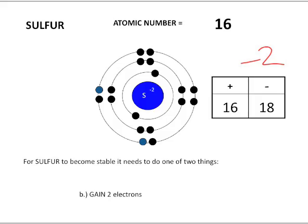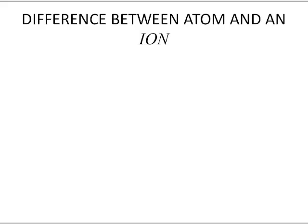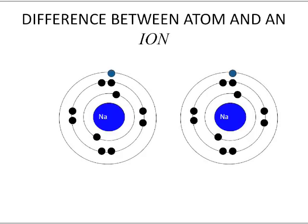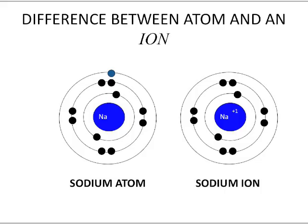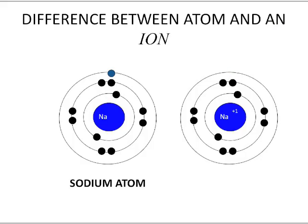So let's see the difference between an atom and an ion. Here we have two sodium examples. Both are identical sodium atoms — same electron count, everything. Watch what happens: take away that one electron and it becomes positively charged because we lost an electron. So we now have what we call a sodium ion.